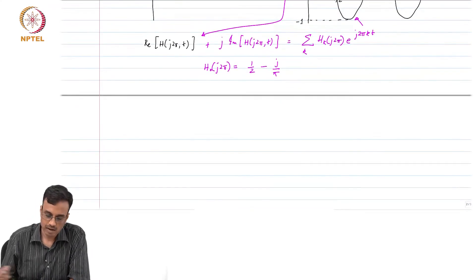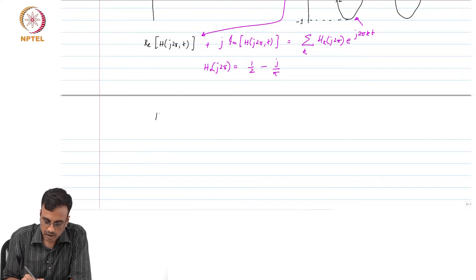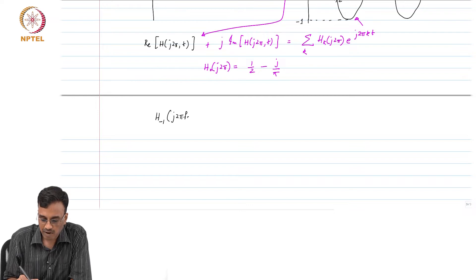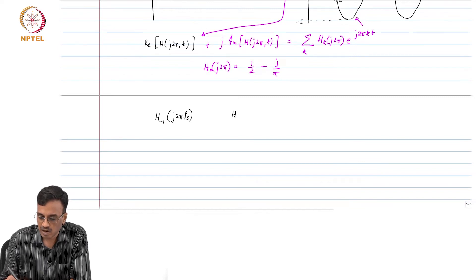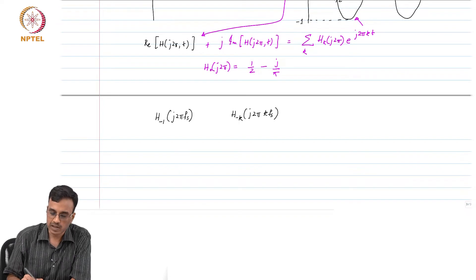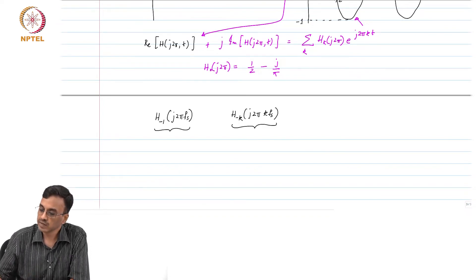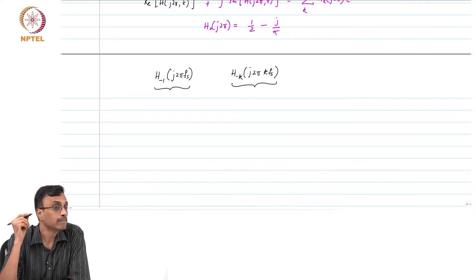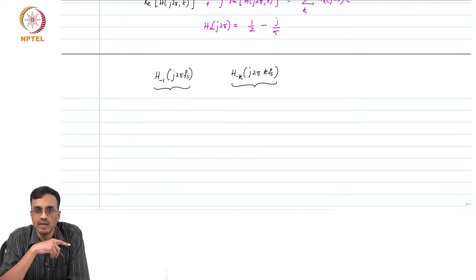In many practical situations you need to find harmonic transfer functions of the form H_{-1}(j2πfs), or in general H_{-k}(j2πkfs). What is special about these situations? It is demodulation — the output frequency is always at DC.